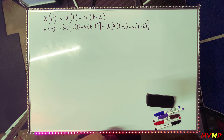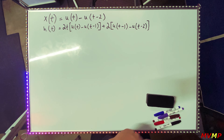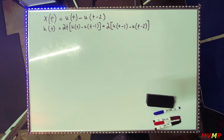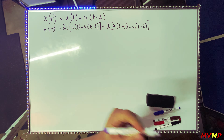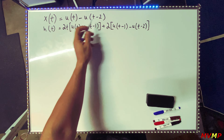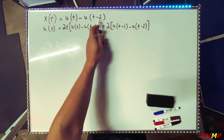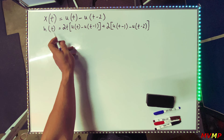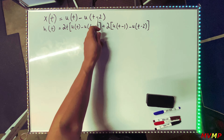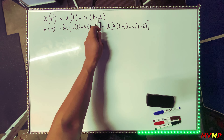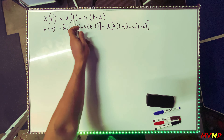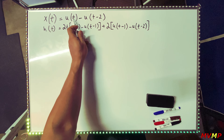We are going to solve this by the graphical method. The easiest way to do this is to look at the shifting of both the input and the impulse response. You'll see it is shifted by a maximum of two units.